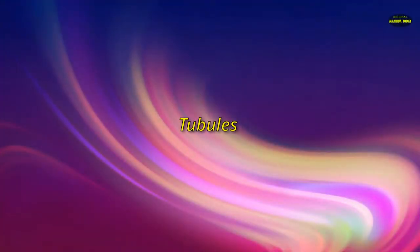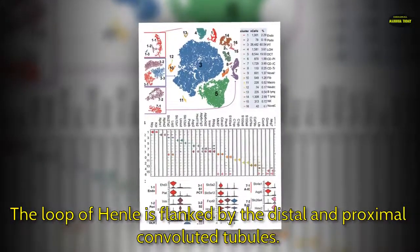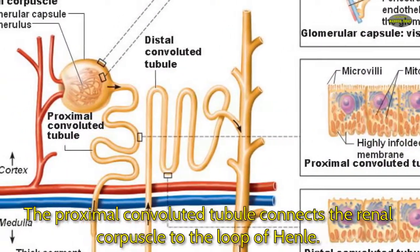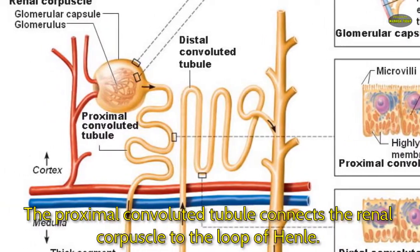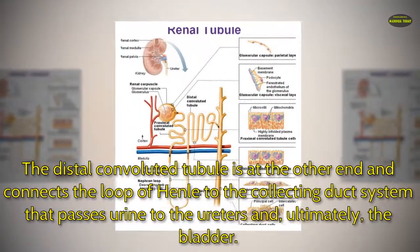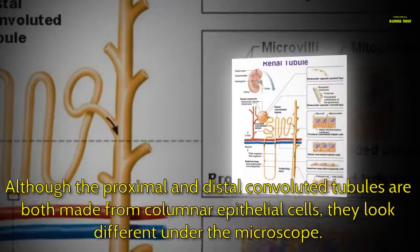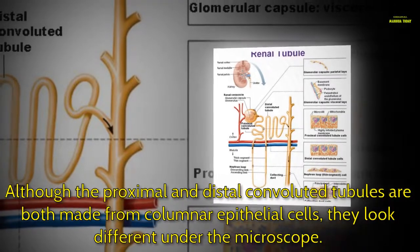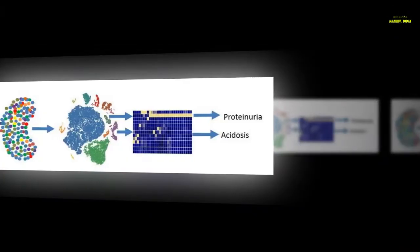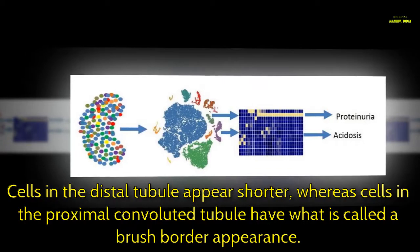The loop of Henle is flanked by the distal and proximal convoluted tubules. The proximal convoluted tubule connects the renal corpuscle to the loop of Henle. The distal convoluted tubule connects the loop of Henle to the collecting duct system that passes urine to the ureters and, ultimately, the bladder. Although the proximal and distal convoluted tubules are both made from columnar epithelial cells, they look different under the microscope. Cells in the distal tubule appear shorter, whereas cells in the proximal convoluted tubule have what is called a brush border appearance.